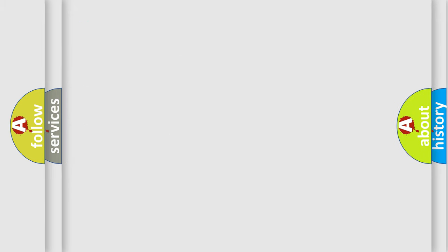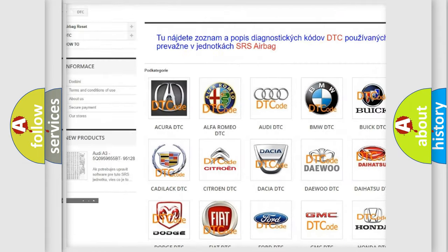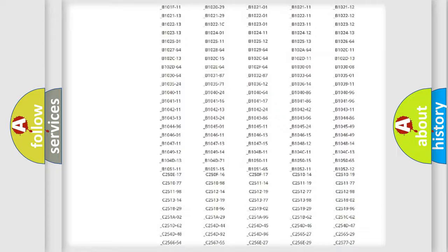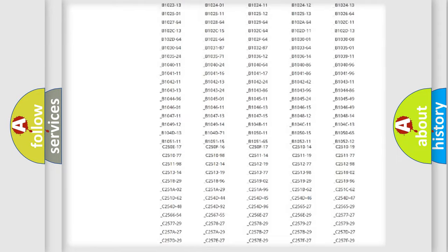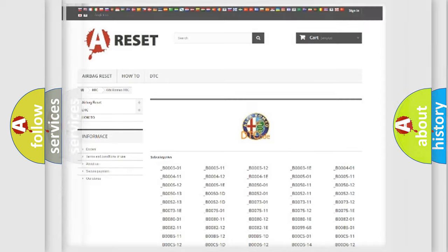Our website airbagreset.sk produces useful videos for you. You do not have to go through the OBD2 protocol anymore to know how to troubleshoot any car breakdown. You will find all the diagnostic codes that can be diagnosed in Alfa Romeo vehicles, also many other useful things.